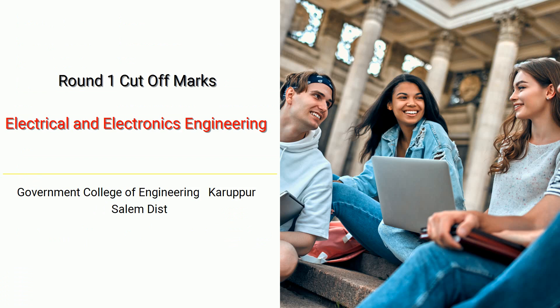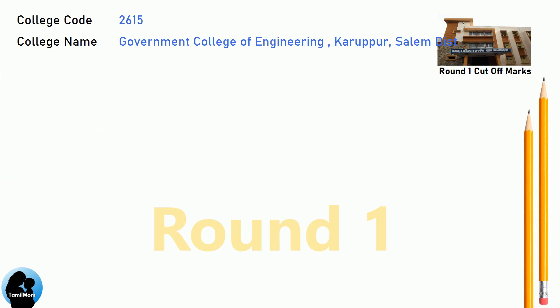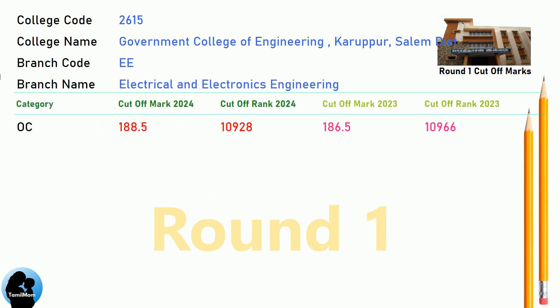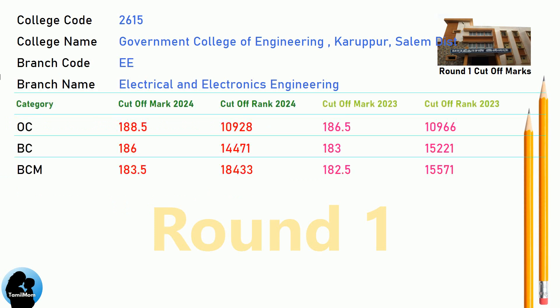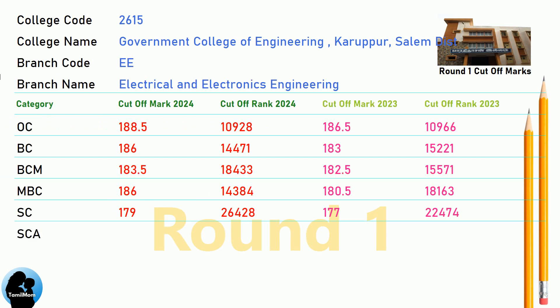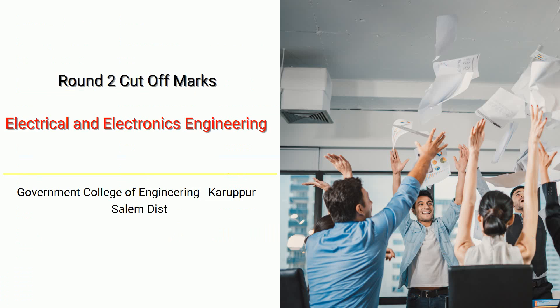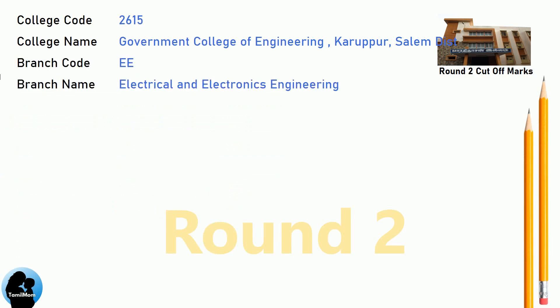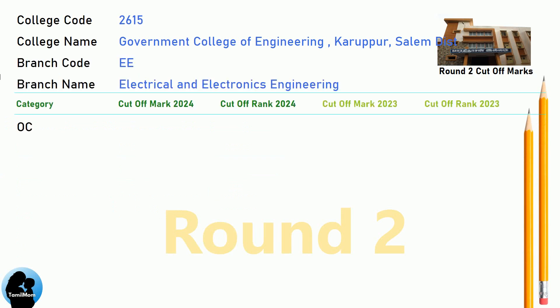BNEA Round 1 Cut-off for Government College of Engineering, Karupur, Salem District in Electrical and Electronics Engineering. BNEA 9.5 Reservation Cut-off for Government College of Engineering, Karupur, Salem District in Electrical and Electronics Engineering.